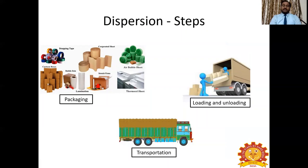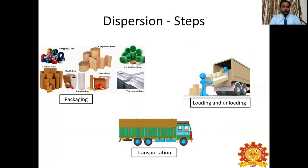Distribution contains different steps because it is not done very easily. Before distributing products to the final consumer, we have to do many things. The only way to distribute commodities is to transport them from the central place to the wholesaler or retailer. When we try to transport these commodities, we have to pack them well. For packaging, you need packing materials, which differ for each type of product — some products demand corrugated sheets, some demand wooden boxes, bubble wrap, thermocol sheets, laminations, plastic boxes, cellophane tapes, etc. These are some of the packing materials needed before transporting.